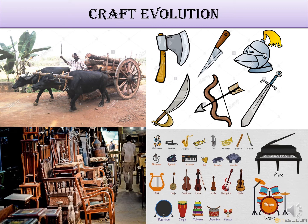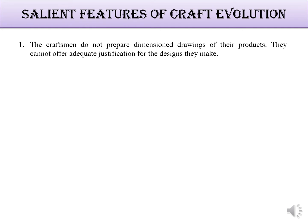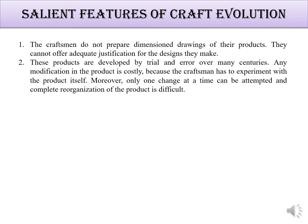Furniture is another example from the oldest times where no design methods were present. Now design methods are available, but before studying them, let's look at some salient features of craft evolution. Craftsmen do not prepare dimension drawings. It is a trial-and-error method — if the product works, it is good; if not, it is not good. When design is not available, there is a major drawback.